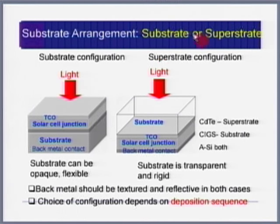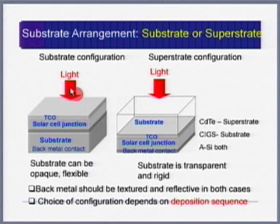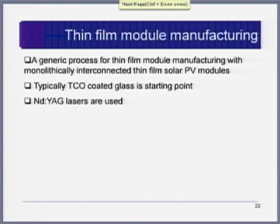There are two substrate configurations: superstrate and substrate. In the superstrate arrangement, light enters through the substrate (which must be transparent, like glass). In the substrate arrangement, the substrate can be metal and light enters from the top. This is a key structural difference in thin film module design.